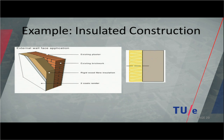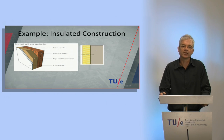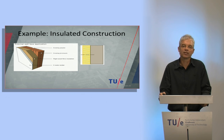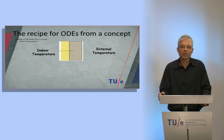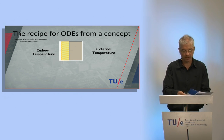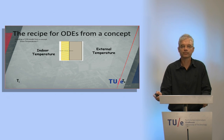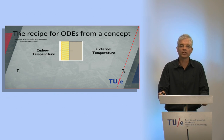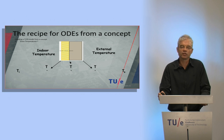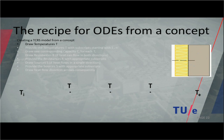This is the example: an insulated construction. We have brick, insulation material, and some plaster on the left-hand side. On the right-hand side, you see a simplified version with just the brick and the insulation material. We start with the recipe to derive ODEs from this concept. The first step is to draw the temperatures: we start with the indoor temperature Ti and the external temperature Te. Next, we draw the temperatures of interest — the surface temperature, the temperature between the insulation and the brick, and the external surface temperature.